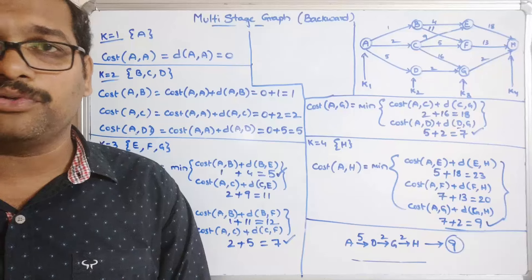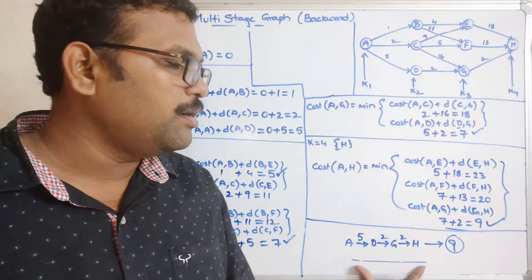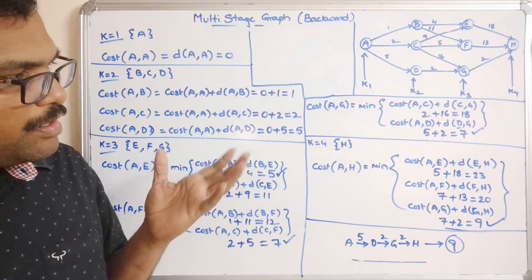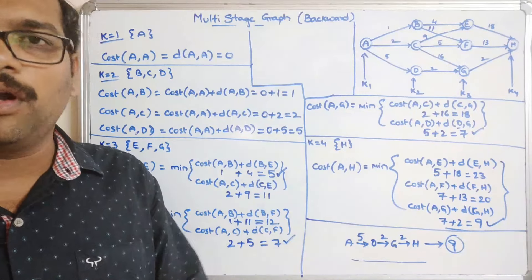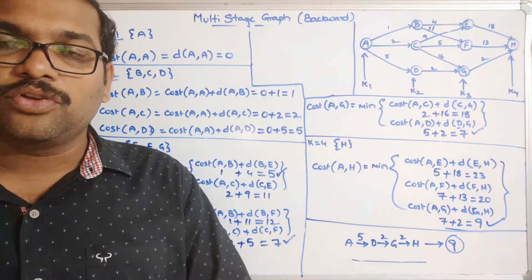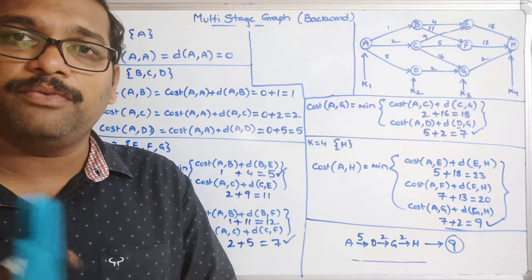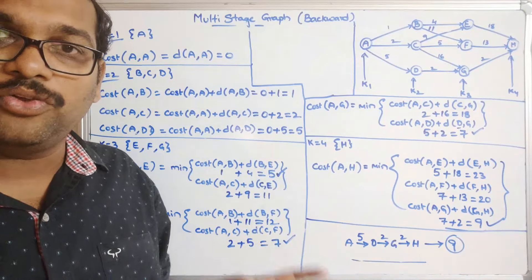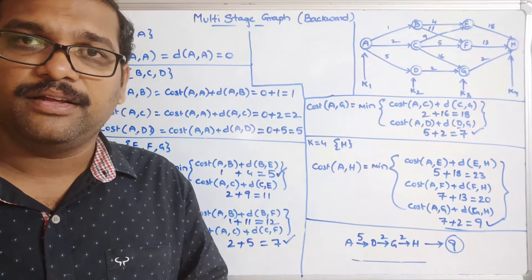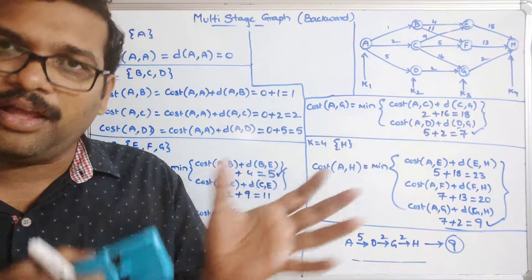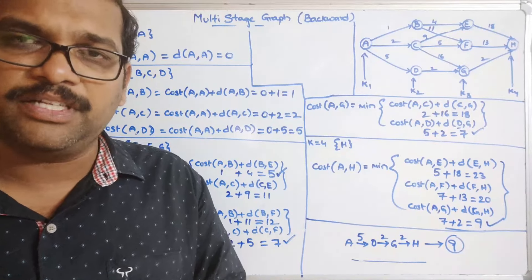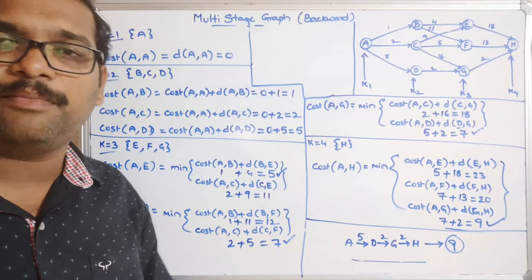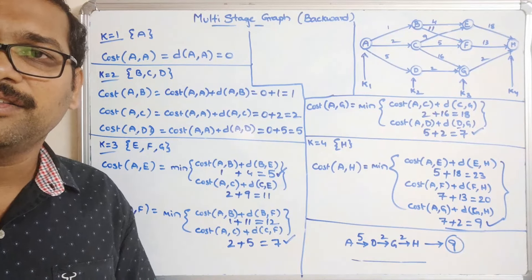This is the same diagram used for the forward approach, and we got the same shortest path. The complete subject link will be posted in the description. In the forward approach we took one more example with 5 stages — try to solve that using this backward approach procedure and you should get the same shortest path. Comment your answers and doubts below. If you enjoyed this session, please like, share, and subscribe to our channel. Thank you.